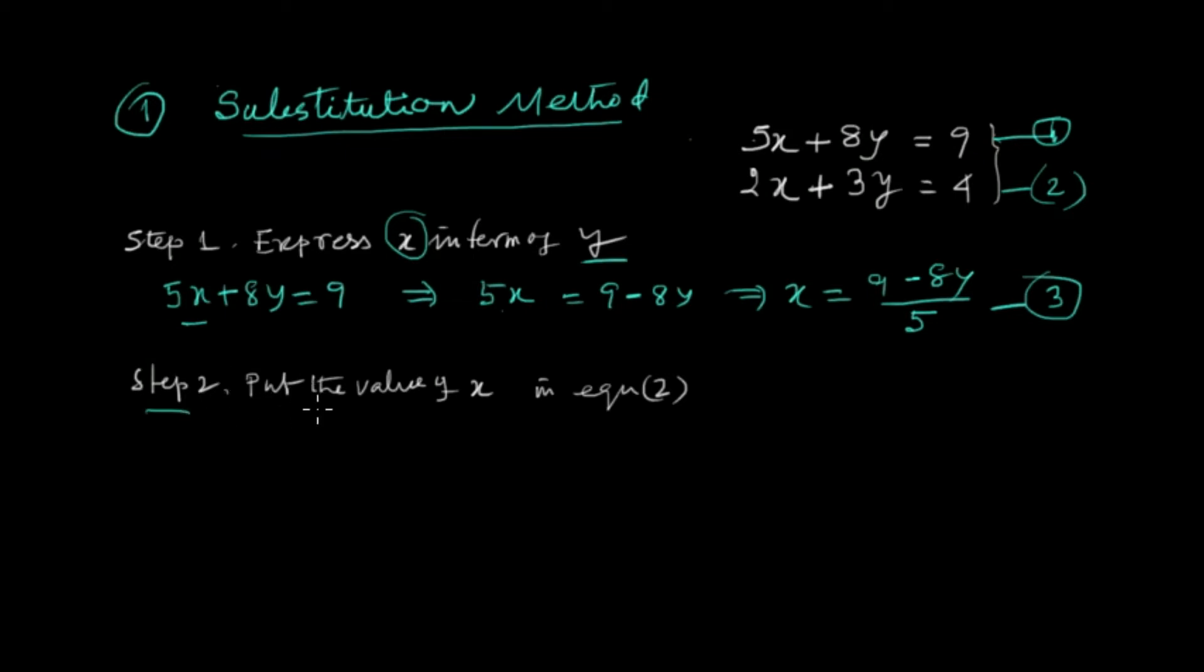Next, step 2: we will put the value of x in equation 2. Our equation 2 is 2x plus 3y equals 4. So here we substitute x. What is the value of x from equation 3? 9 minus 8y over 5.